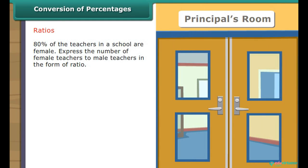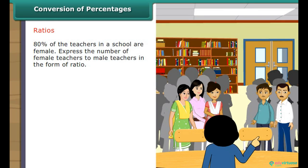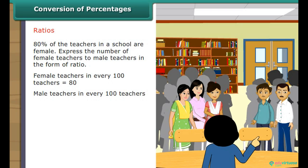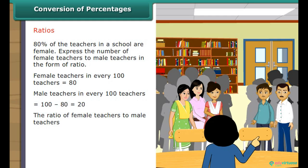80% of the teachers in a school are female. Express the number of female teachers to male teachers as a ratio. Female teachers in every 100 teachers equals 80. Male teachers in every 100 teachers equals 100 minus 80, which equals 20. The ratio of female to male teachers equals 80 is to 20, which simplifies to 8 is to 2, which equals 4 is to 1.